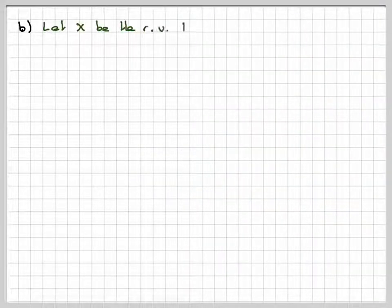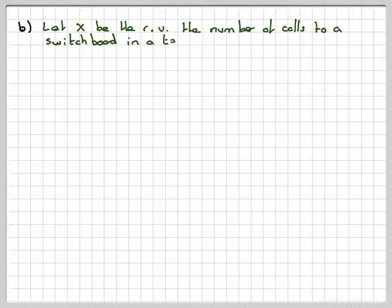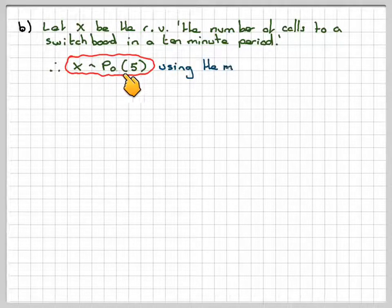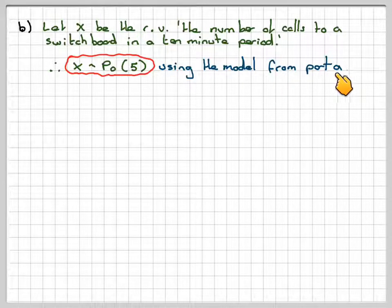So part b, let x be the random variable, the number of calls to a switchboard in a 10 minute period. Then x is Poisson distribution with a mean of 5 or parameter lambda 5 using the model from part a.